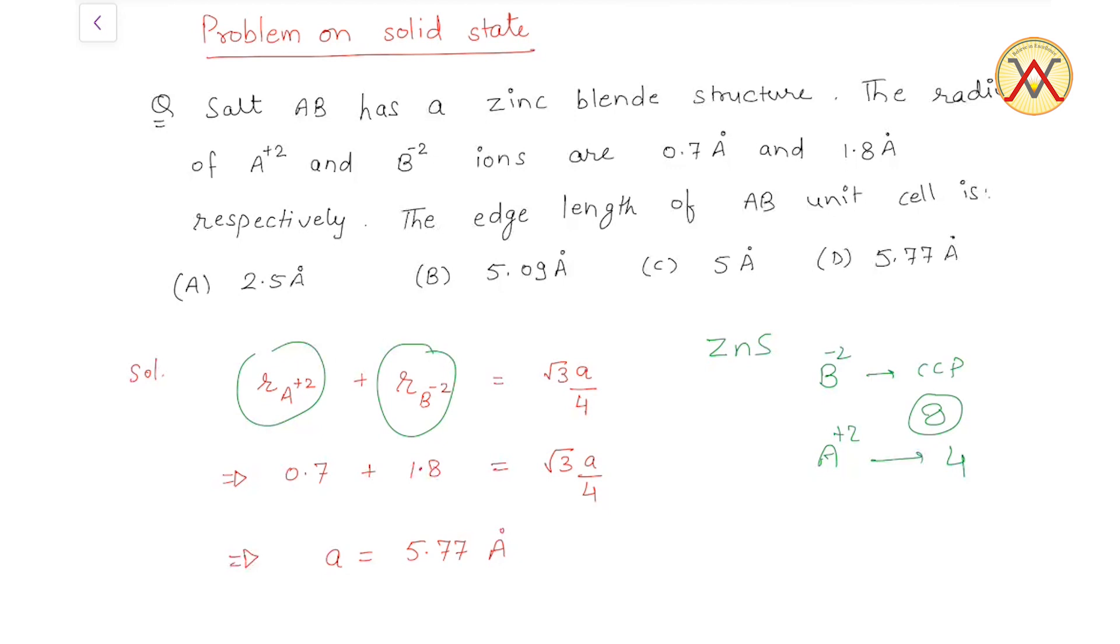Putting the values here: 0.7 plus 1.8 equals root 3 a by 4. So the value of a comes out to be 5.77 angstrom. Thank you.